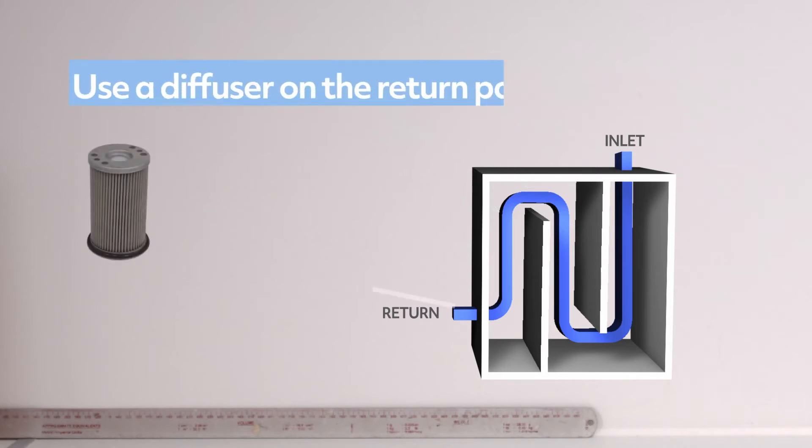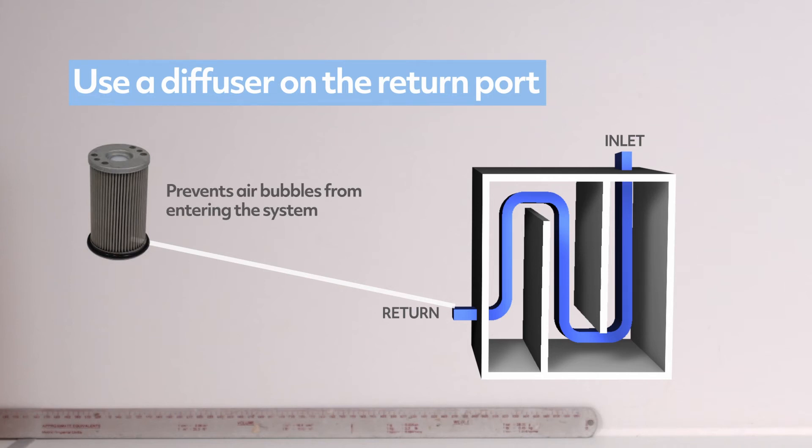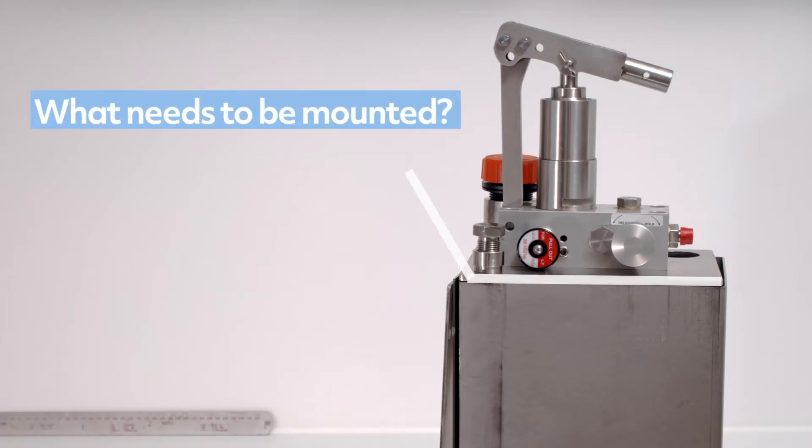Use a diffuser on the return port so that fluid doesn't spray into the tank and cause air bubbles, which could damage the system. Take a look at stealth return filters. Now consider what needs to be mounted on the reservoir.